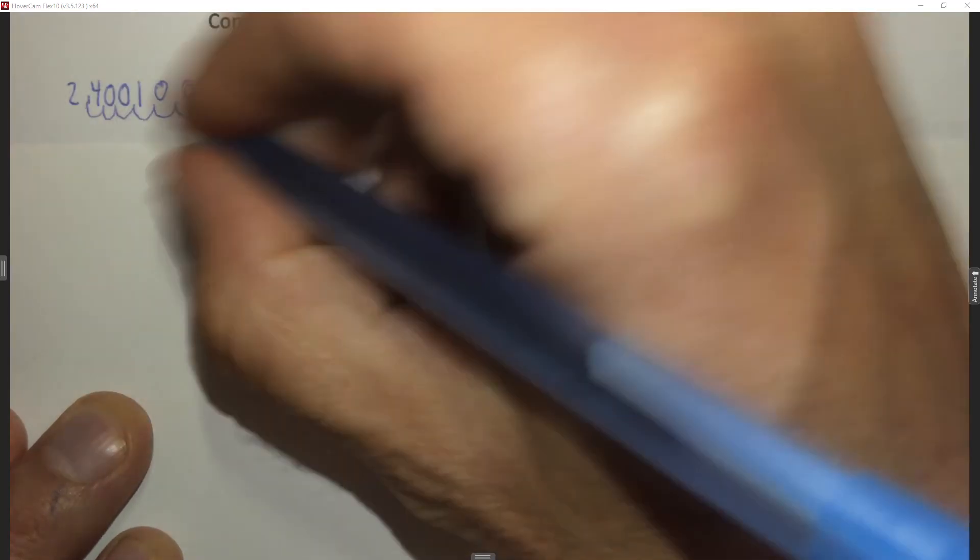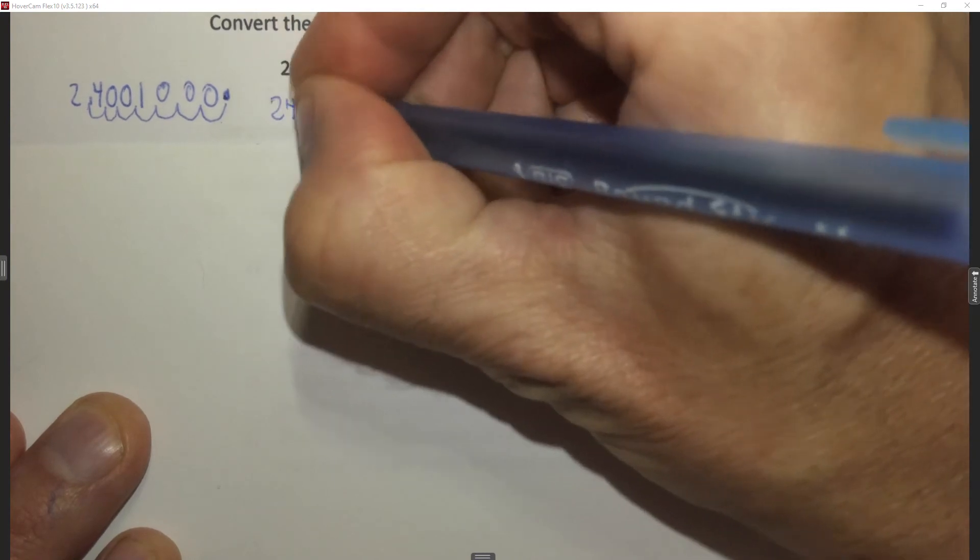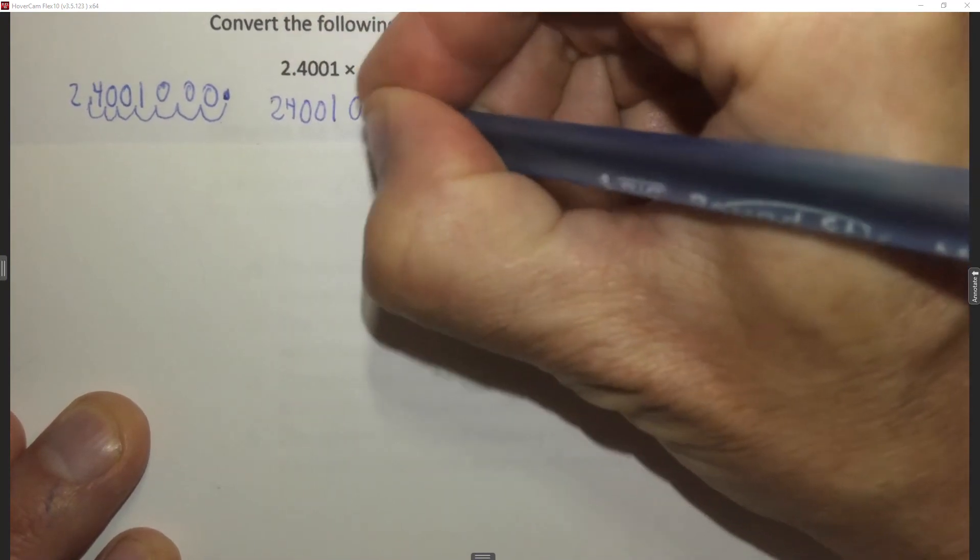So if I want to rewrite this so I don't have all those squiggles next to it, it's going to be 2, 4, 0, 0, 1, 0, 0, 0.